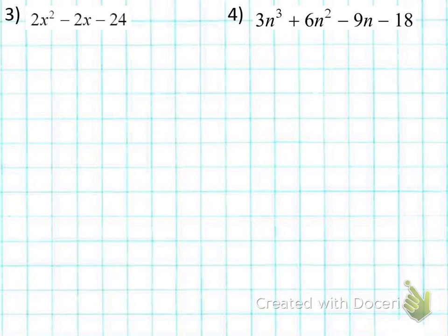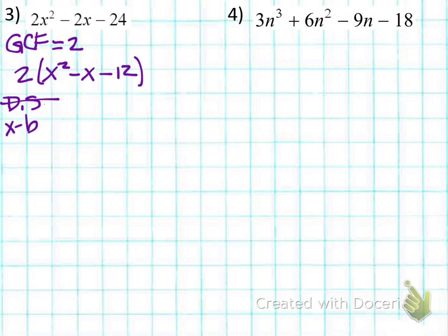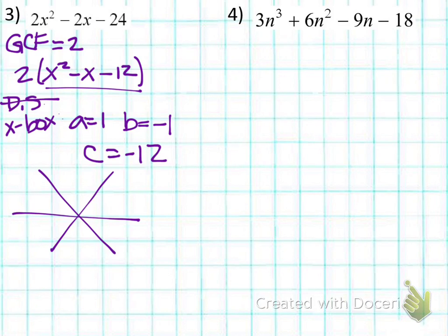Numbers 3 and 4—the first thing I'm going to do is look for a common factor. I have a common factor of 2 here, and when I factor that out I'm left with this. I can't do difference of squares because there's more than two terms, so I'm going to move on and see if I can do X-box. That would be a good strategy here since I have three terms. I'll fill out my X-box, so A goes here, AC and B.